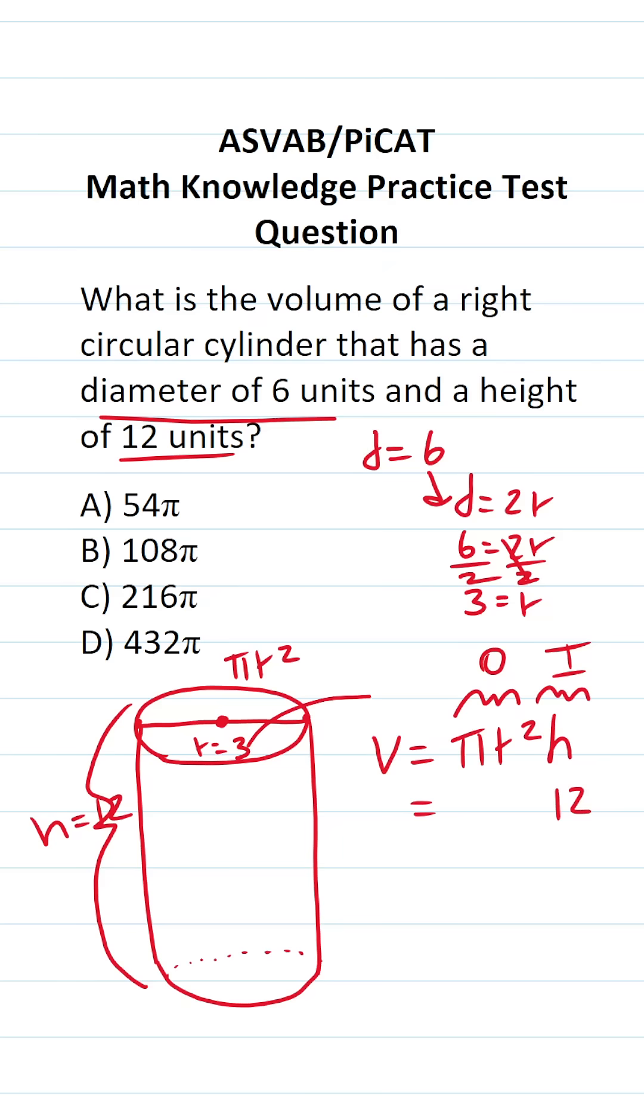Therefore, we can plug in three for r here. This becomes pi times three squared. Three squared is three times three, which is nine. So this becomes pi times nine times 12.